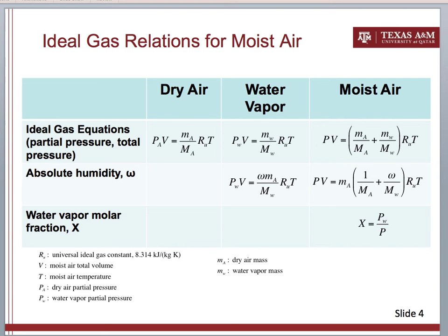In this video, we are going to talk about ideal gas equations — ideal gas relations for moist air. The concepts involved in this video are partial pressure, total pressure, and absolute humidity.